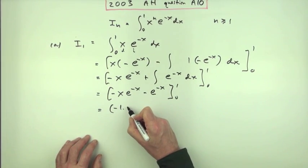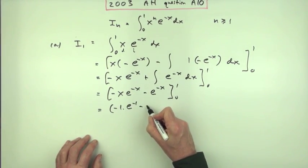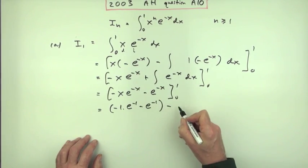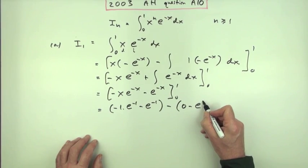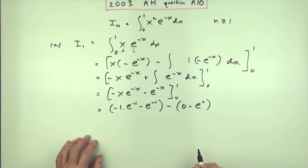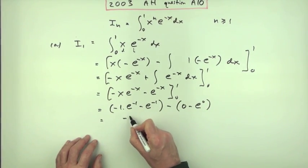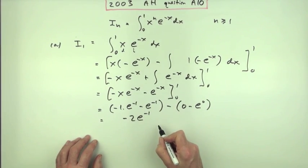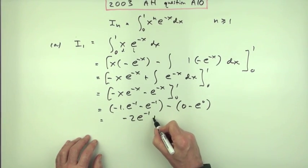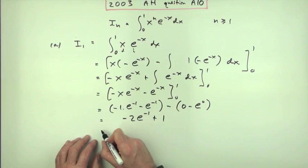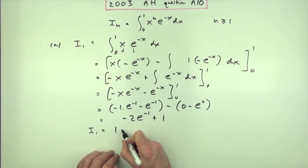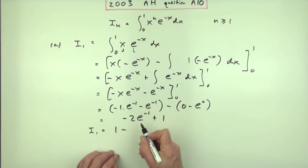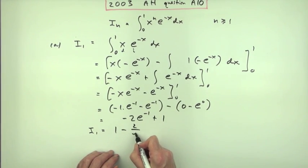So evaluating at 1, that would be negative 1 times e to the negative 1 minus e to the negative 1 minus 0. So that's 0 minus e to the negative, so that's just e to the 0. So that's negative 2 e to the negative 1 minus minus makes it plus 1. But I think I'll write that as i₁ equals 1 minus, but instead of 2 e to the negative 1, I think I'll write that as 2 over e.